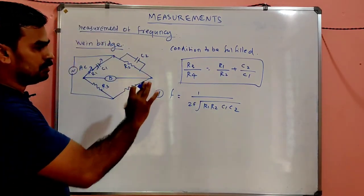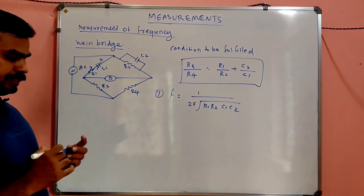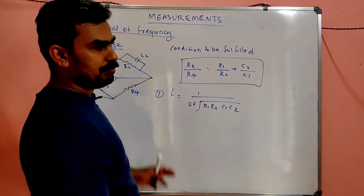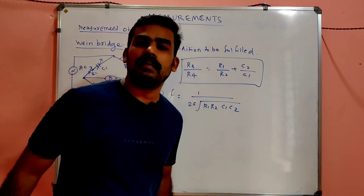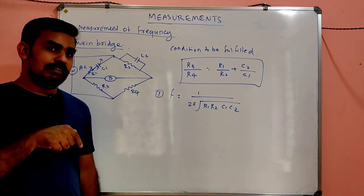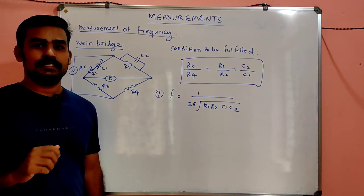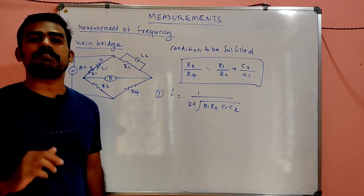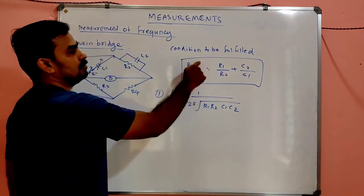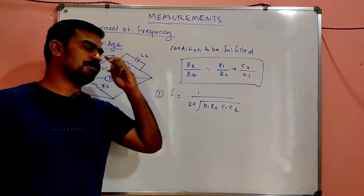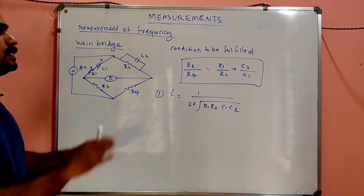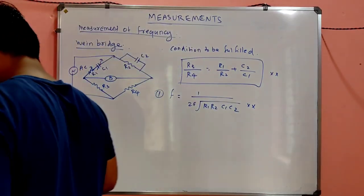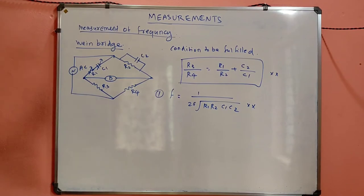In examination, there may be a question giving values of R1, R2, C1, C2 and asking you to find frequency. If you are enthusiastic and directly substitute without checking the condition, you might get an answer that appears in the options. But there will also be an option 'cannot be determined' which you may miss — and your answer will be wrong.